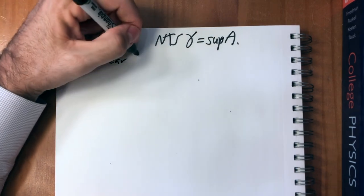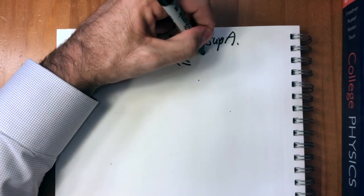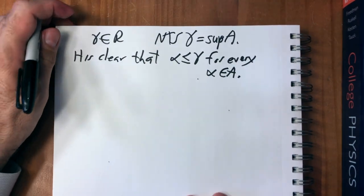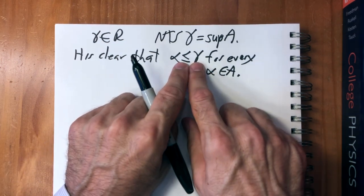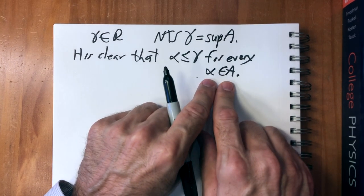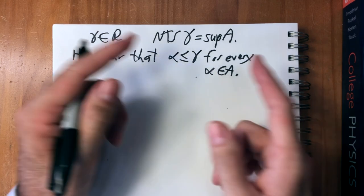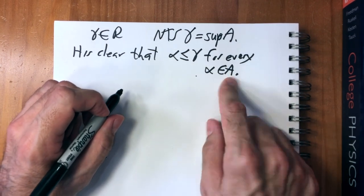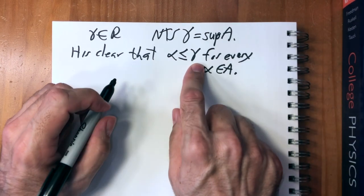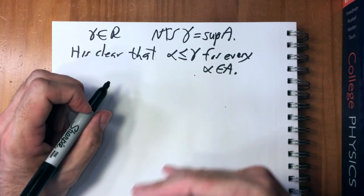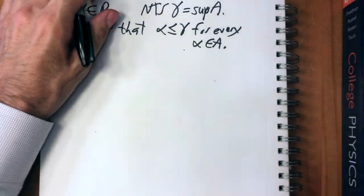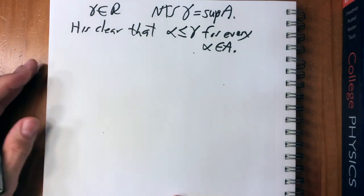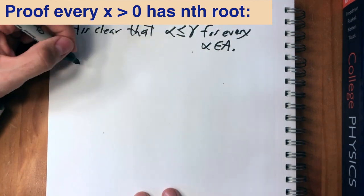It is clear that alpha is less than or equal to gamma for every alpha in A, because gamma is the union of all alphas in A, so every alpha is a subset of gamma. From our definition of less-than, gamma is greater than or equal to every element of A, which means gamma is an upper bound. We've at least shown gamma is an upper bound of A. Now we need to show it's the least upper bound.